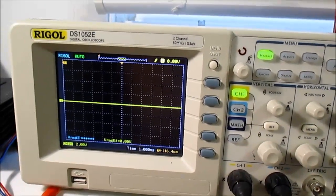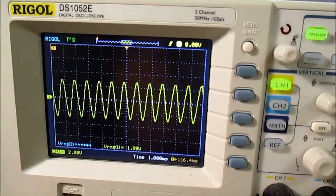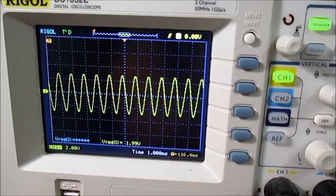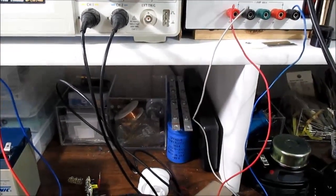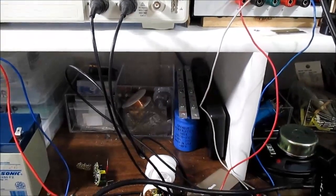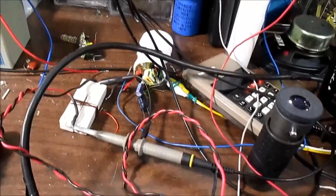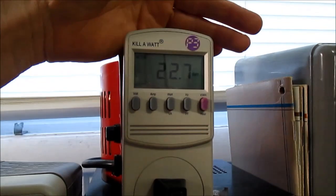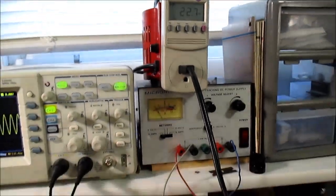Okay, so now I have the amplifier set to 2 volts of RMS output. And that would equal, well, it would be 2 squared, which is 4 divided by 4. That would be 1 watt per channel. And now the amplifier is drawing 22.7 watts.